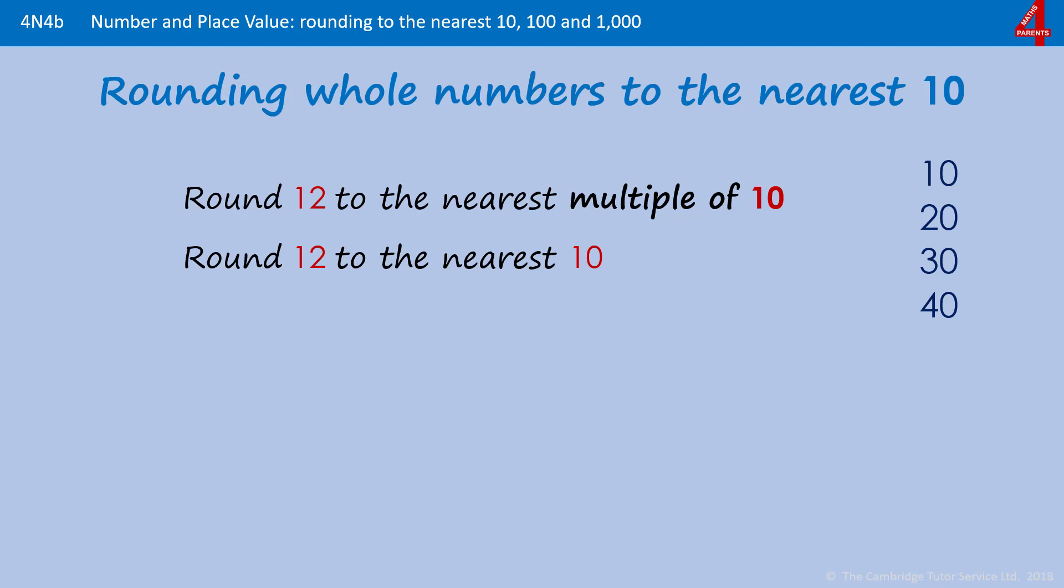As long as it's a whole number with a zero in the ones, then it's a multiple of 10. Multiples of 100 are also multiples of 10, as long as there's a zero in the ones column and it's a whole number. The same with multiples of a thousand—they're also multiples of 10.